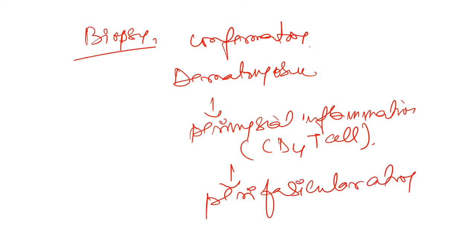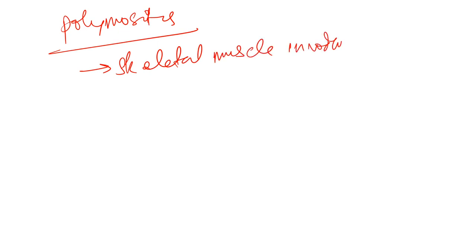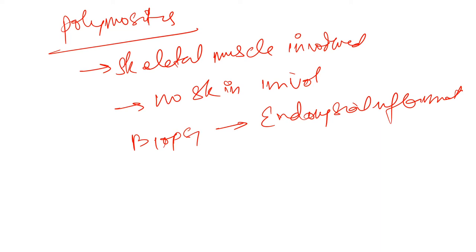Now briefly about polymyositis: in polymyositis, skeletal muscles are involved, but the skin is not involved. On biopsy, we find endomysial inflammation. This concludes the discussion of autoimmune disorders including Sjögren's syndrome, systemic sclerosis, dermatomyositis, and polymyositis.